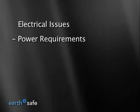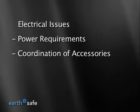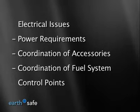Electrical issues are power requirements for fuel system equipment, coordination of generator accessories such as day tanks and filters, and the coordination of fuel system control points needed for generators and switchgear. Building management system coordination is a determination of the points to be monitored and the communication protocols. Fire alarm and security system issues involve coordination of any required fuel system control points for these systems.